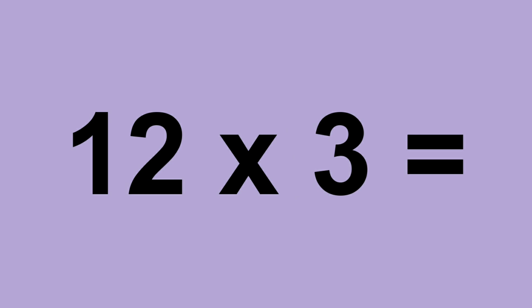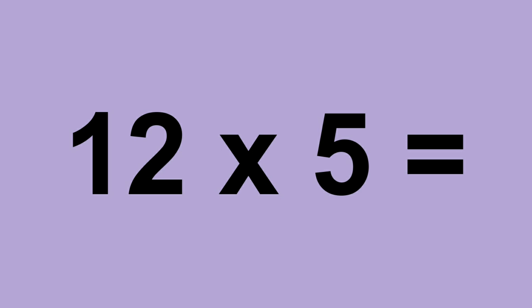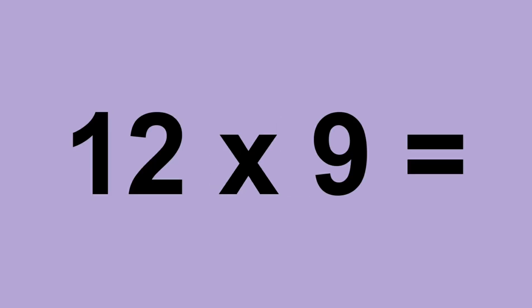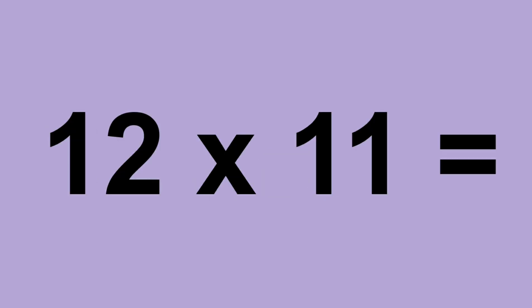12 times 4 equals 48. 12 times 5 equals 60. 12 times 6 equals 72. 12 times 7 equals 84. 12 times 8 equals 96. 12 times 9 equals 108. 12 times 10 equals 120. 12 times 11 equals 132. 12 times 12 equals 144.